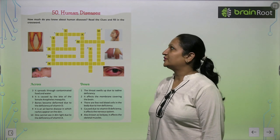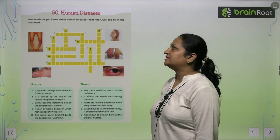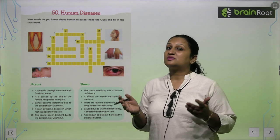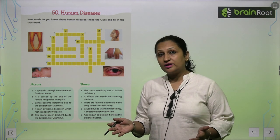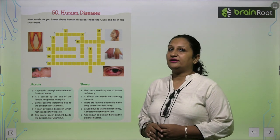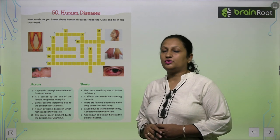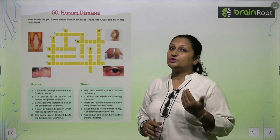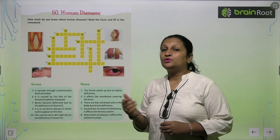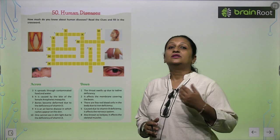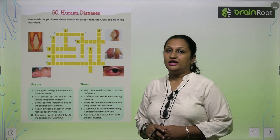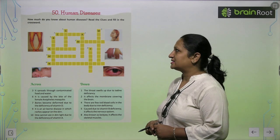Children, let's begin with chapter number 50: Human Diseases. You all know that the human body is made up of so many organs. If there is any problem in any organ, we get a disease. It can be due to some contaminated food — if we eat contaminated food from the street or drink dirty water, we get diseases.